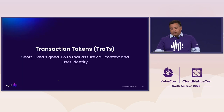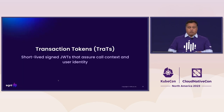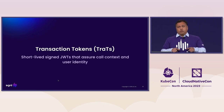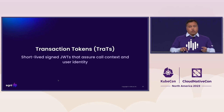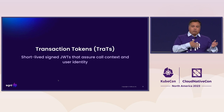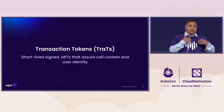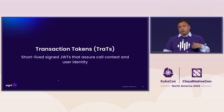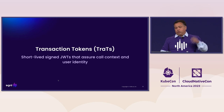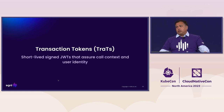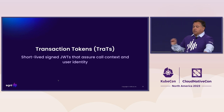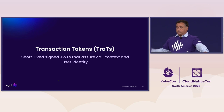We are introducing this concept called Trats — Transaction Tokens. This is currently an individual draft in the IETF OAuth working group, being proposed to be adopted as a working group draft soon. Hopefully in a few months we should see an RFC come out of all this. They're basically short-lived JWTs that assure the call context and the user identity.